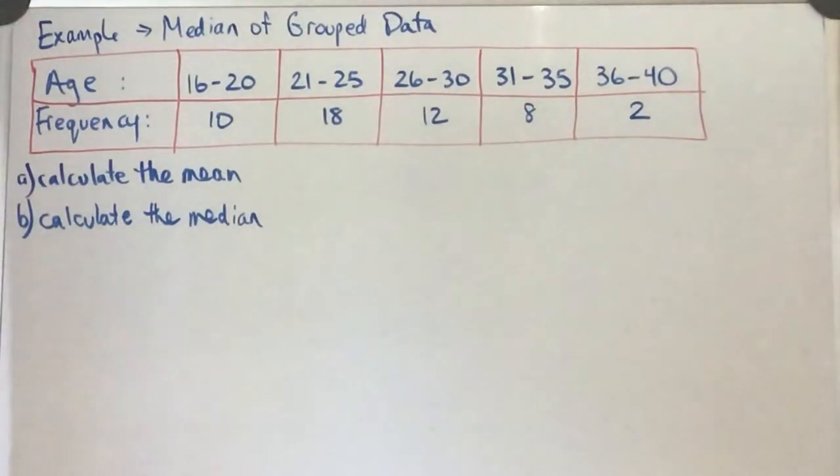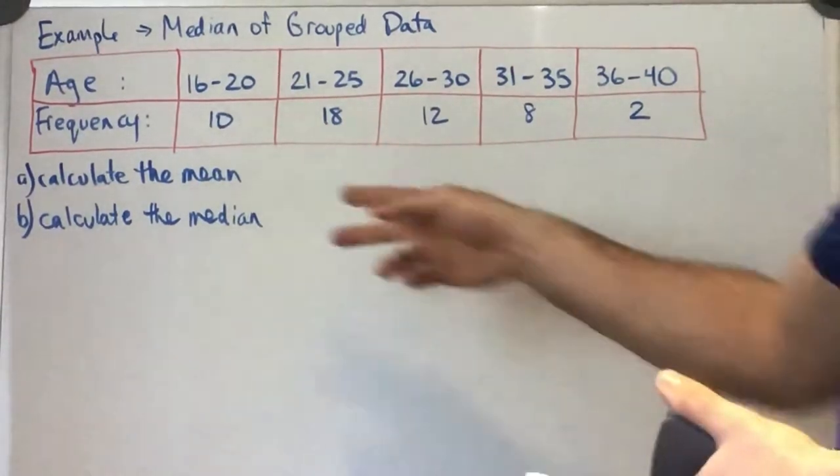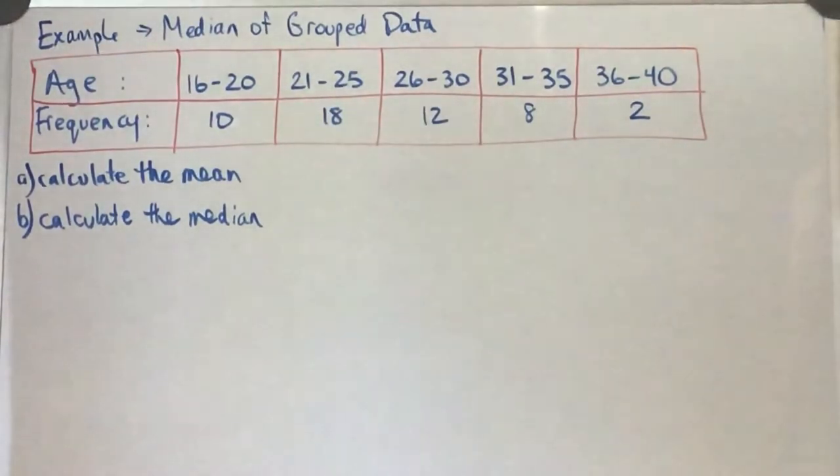Okay, so if we're going to find a mean, both of these are going to be estimates. Since we don't have the actual list of all the ages, we're going to do our best to get an accurate estimate.